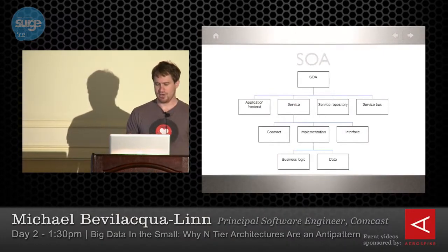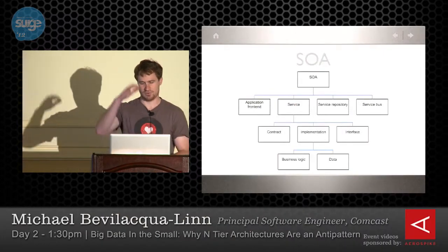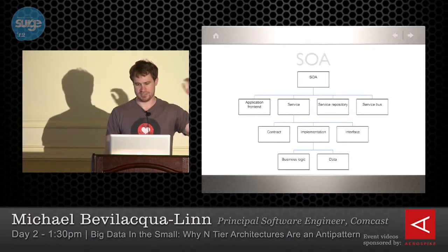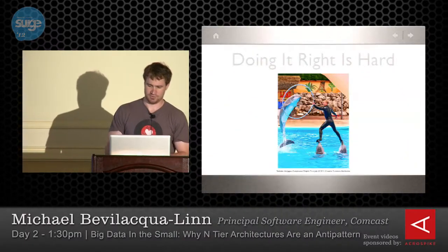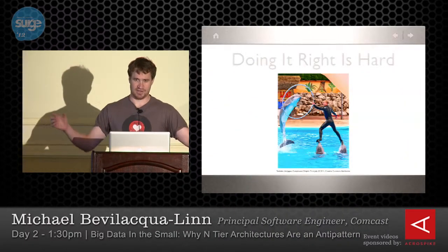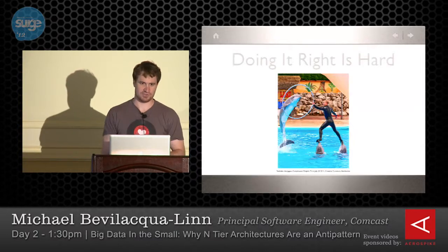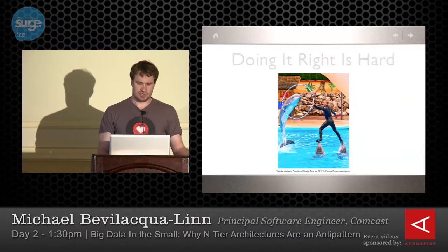Where does that lead us? One old place it's led us is this sort of three-tier architecture — we've got a presentation, business, and data layer. And from there, a services-oriented architecture, where we try to scale it out to a bunch of little services that can all scale independently. But doing that right is actually really, really hard.